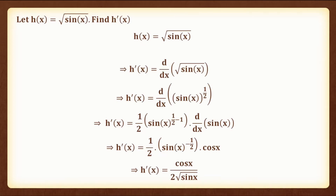The next question is: let h of x is equal to root of sin x, find h prime of x. h of x equals root of sin x implies h prime of x is equal to d by dx of sin x to the power half. This implies h prime of x is equal to half of sin x to the power half minus 1 into d by dx of sin x, which implies h prime of x is equal to half into sin x to the power negative half into cos x, because d by dx of sin x is equal to cos x. This implies h prime of x is equal to cos x by 2 root of sin x.